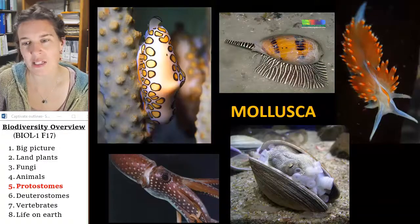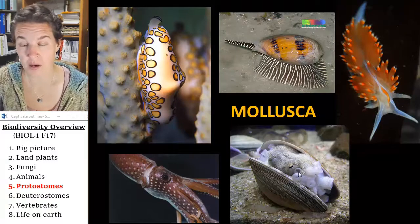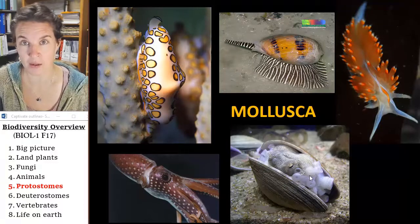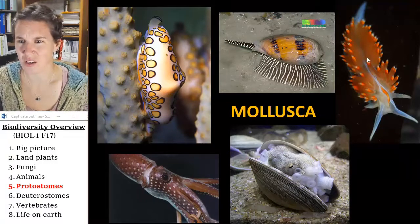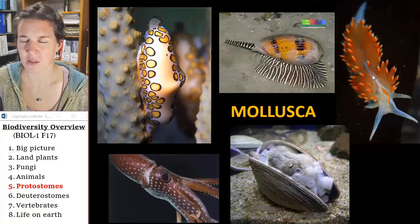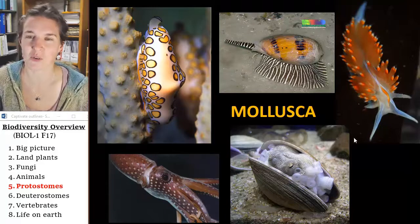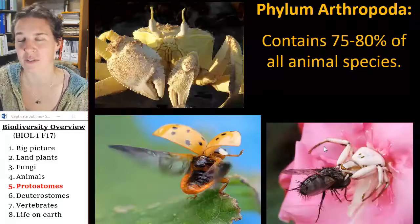Mollusks — great diversity in mollusk land as well. You've got clams and things like octopi, squids, cuttlefish, and nudibranchs, which are sea slugs. These things are so cool. I could go on forever.